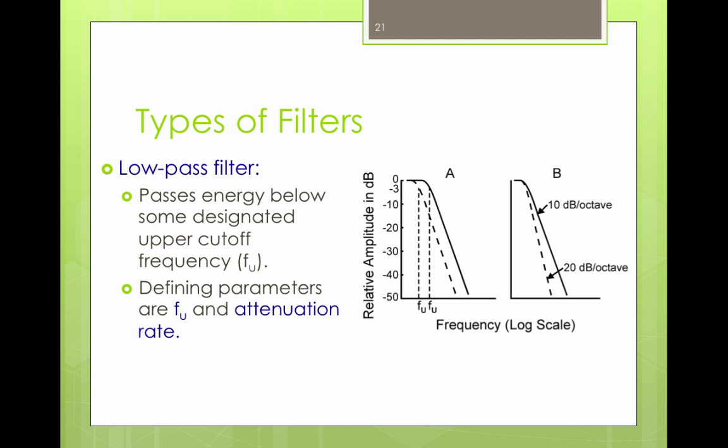There are different types of filters. There's a low-pass filter. Low-pass filters let low-frequency energy pass through and they attenuate high-frequency energy. So low-pass filters pass energy below some designated upper cut-off frequency, the FU. And again, we're looking at two curves here, a curve with the dashed line and a curve with the solid line.